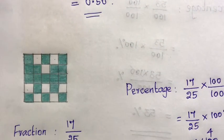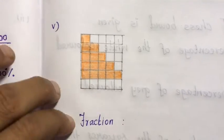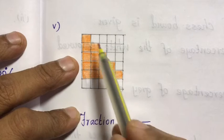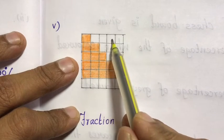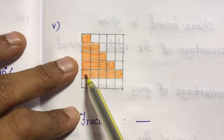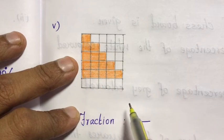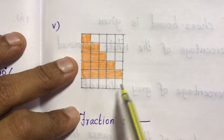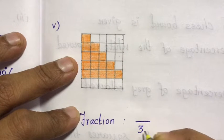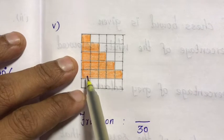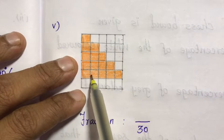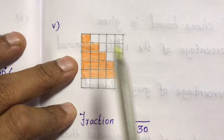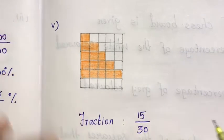Next, fifth subdivision. Fraction formula: total number of squares — 5 columns of 6 is 30, so denominator is 30. Counting colored squares: 1 through 15, so 15 colored squares. Fraction form is 15 by 30.